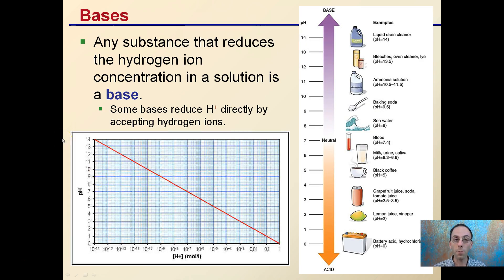Bases are any substance that reduces the hydrogen ion concentration in a solution. Simply, those bases reduce hydrogen ions directly by accepting them. Examples of solutions that are basic would be baking soda, ammonia, bleaches, and drain cleaners. Those are much more in the base side, or that pH above 7.